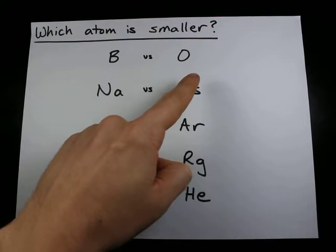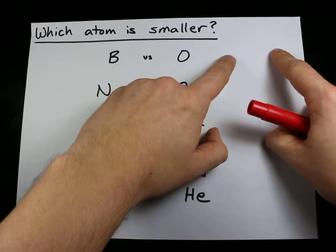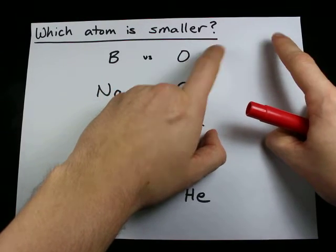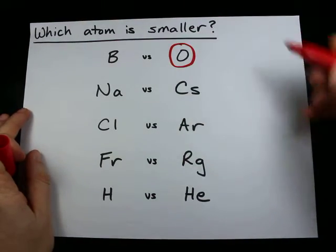If we're comparing boron with oxygen, we will see that they're both in the second row of the periodic table. And oxygen is further to the right, therefore it is smaller.